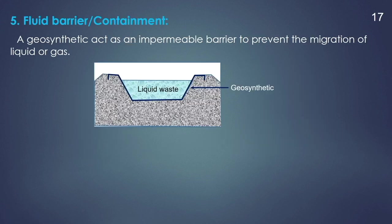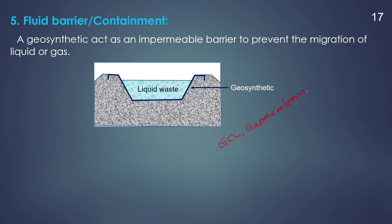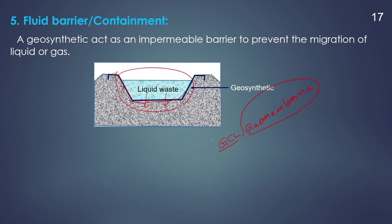The next function of geosynthetics is a fluid barrier or containment. Some geomaterials are very impermeable in nature — for example, geosynthetic clay liner or geomembrane. Due to their impervious nature, GCL or geomembrane can act as a fluid barrier or containment where we need to store water. In a landfill liner, we do not want leachate to migrate into the soil, so we provide a layer of geosynthetic clay liner which acts as a barrier between the leachate and groundwater. Similarly, a geomembrane can be used to provide an impermeable layer to store water, preventing migration of liquid as well as gas.